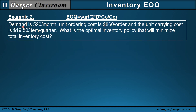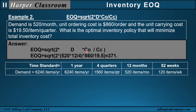Example 2: demand is 5.20 per month, unit ordering cost is $8.60, and unit carrying cost is $19.50 per item per quarter. What is the optimal inventory policy that minimizes total inventory cost? That optimal policy would contain EOQ. From the EOQ equation — 2 times D times C sub O over C sub C — demand is in months but carrying cost is in quarters. To convert months to quarters, transform months to years by multiplying by 12, then transform years to quarters by dividing by 4. Taking $5.20 per month converted to per quarter, times the ordering cost divided by the carrying cost, gives an EOQ of approximately 3.71.